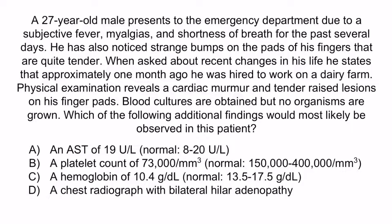A: an AST of 19. B: a platelet count of 73,000. C: a hemoglobin of 10.4. Or D: a chest radiograph with bilateral hilar adenopathy.